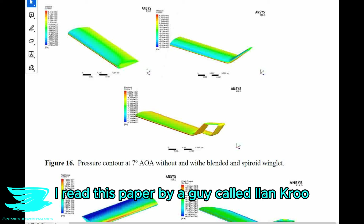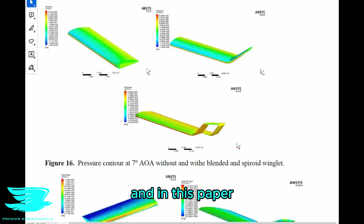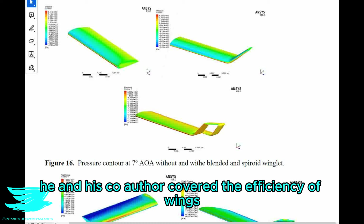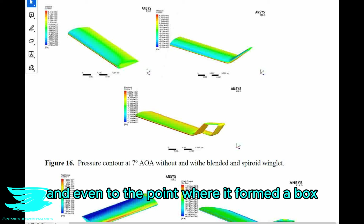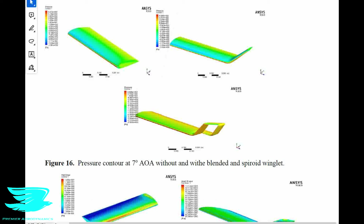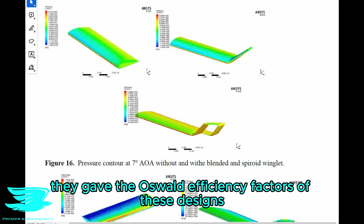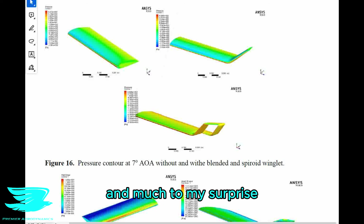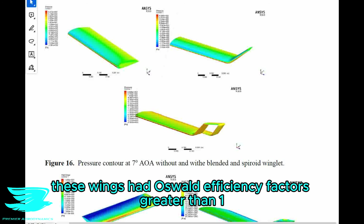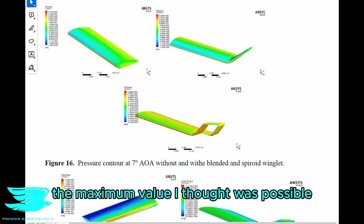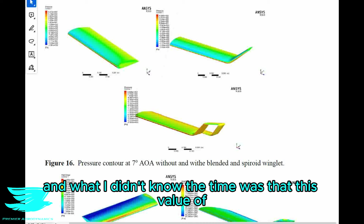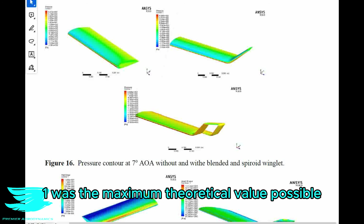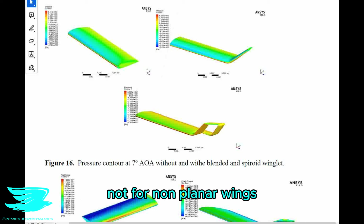One day in the summer of my PhD, when the entire building was a ghost town, I read a paper by a guy called Ilan Kroo. In this paper, he and his co-author covered the efficiency of wings where the tips were rounded up, and even to the point where it formed a box. They gave the Oswald efficiency factors of these designs, and much to my surprise, these wings had Oswald efficiency factors greater than 1 — the maximum value I thought was possible, and the maximum value that is commonly taught.